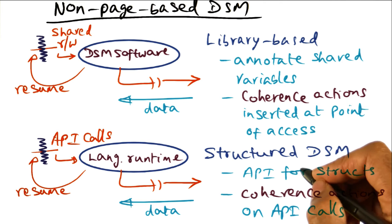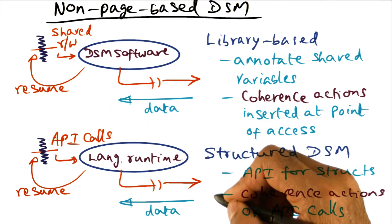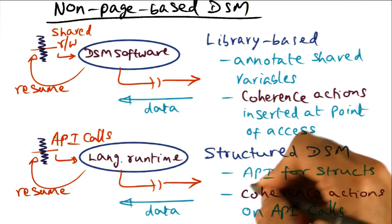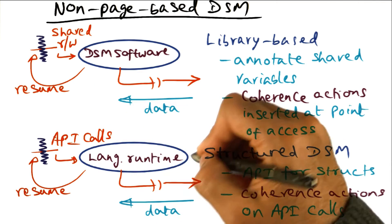So the idea is that there is a programming library which actually provides abstractions that can be manipulated in an application program, and the abstractions can be manipulated using API calls that are part of the language runtime.